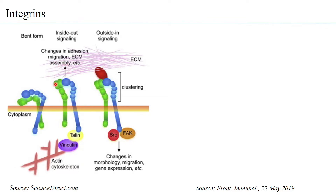This can lead to changes in adhesion, migration, and extracellular matrix assembly. When a component in the intracellular part binds to the integrin and based on that a particular function results, this is what is called inside-out signaling.